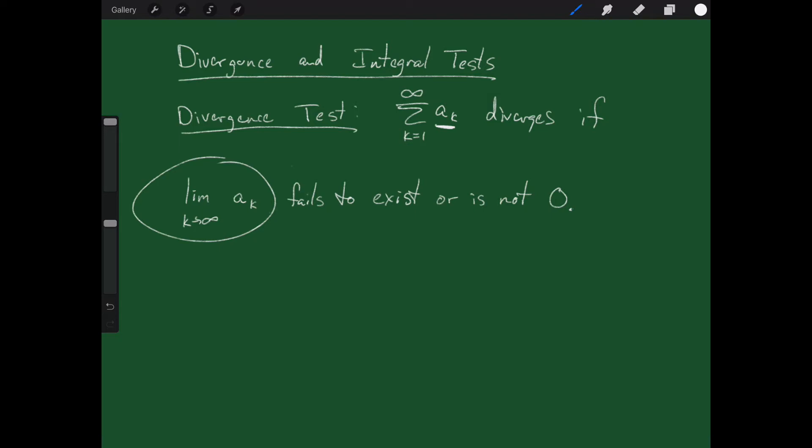So if the limit of the actual sequence numbers is not zero, it diverges and you're done. The divergence test is a very nice test, but the only thing it can tell you is if it diverges. It can never tell you if the series converges.